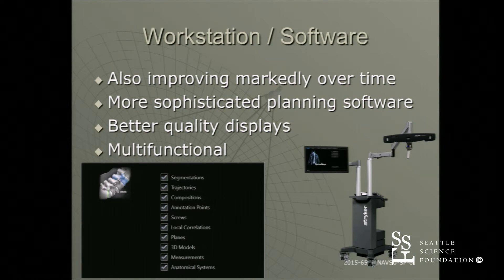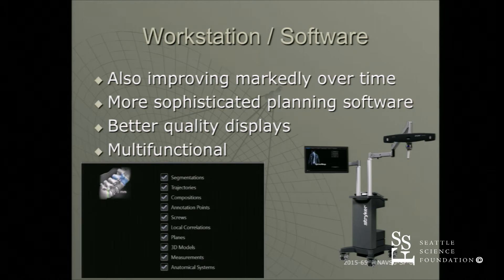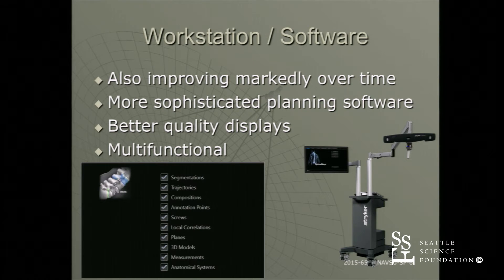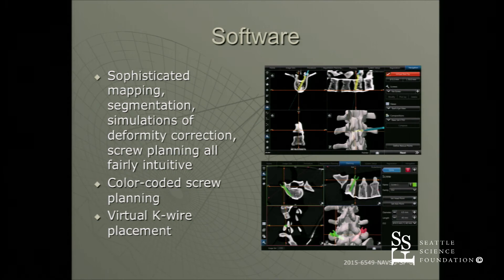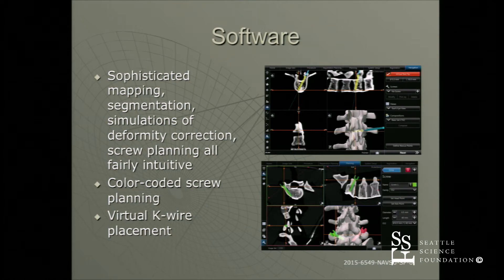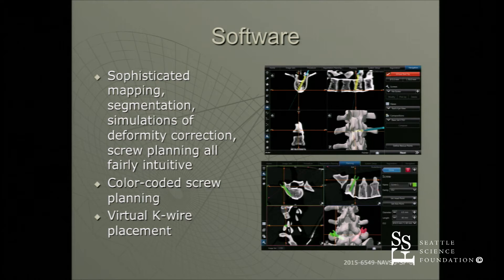The workstation and software has also improved markedly over time. If you come into the lab, some of you have already experienced the pre-planning of the screws — it's very easy and intuitive. You can just add a screw, drag it to where you want it, rotate it, and determine your length and trajectory. The software allows you to map different segments, correct for deformity corrections, and color-code different screws so you can tell your assistant which specific screw to target — for example, the right L5 or left L5.